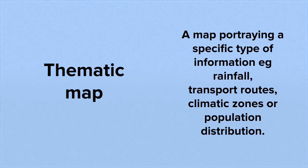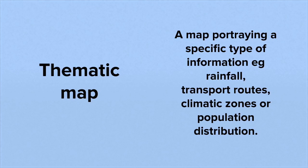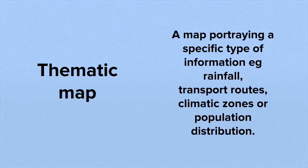And lastly we have thematic maps. These are maps that portray a specific type of information. It might be rainfall or climatic zones or population distribution.